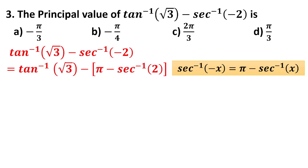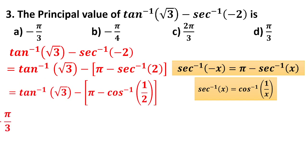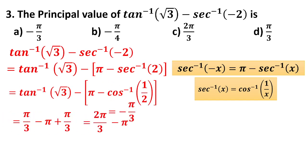If you know sec inverse(2) directly you can proceed; otherwise use the formula sec inverse(x) = cos inverse(1/x). Applying values: tan inverse(√3) = π/3, and cos inverse(1/2) = π/3. Therefore the expression becomes π/3 minus (π minus π/3), which gives π/3 minus π, resulting in the answer minus π/3. Option A.